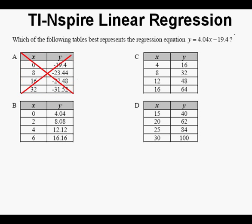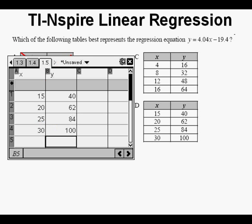Answer a looks like a negative correlation so we can eliminate it without testing. Answer b has a y-intercept of 4.04 when we need a y-intercept of negative 19.04 so we can cross it off as well. So I tried the remaining two answer choices.